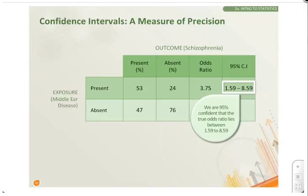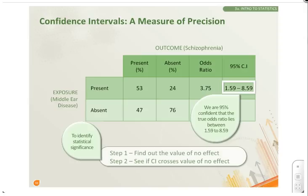There are two simple steps to find out if the confidence intervals are statistically significant. First, find out the value of no effect, and see if the confidence interval crosses the line of no effect. If yes, then the result is not statistically significant.